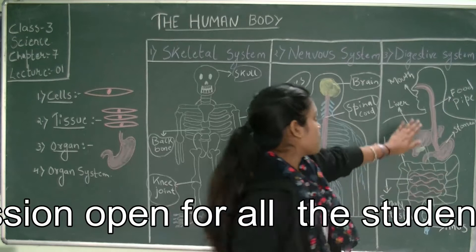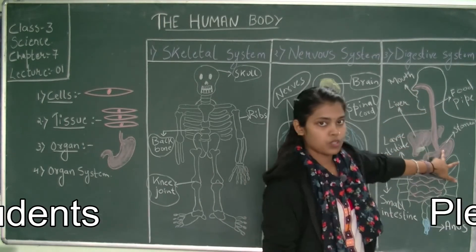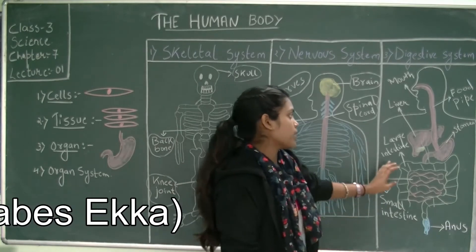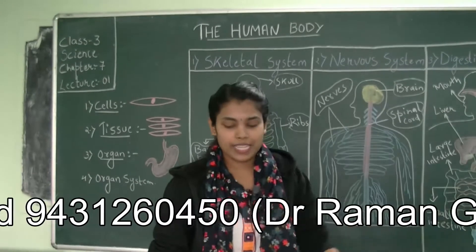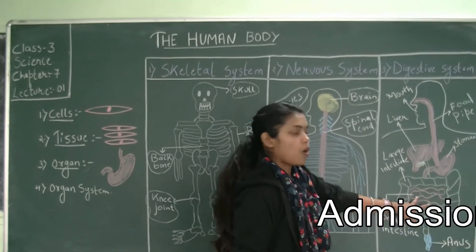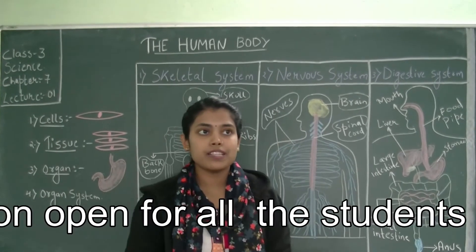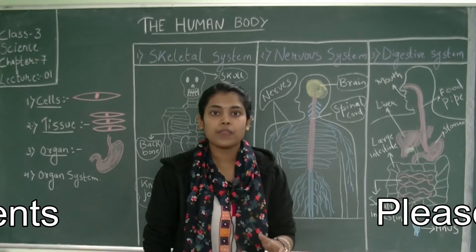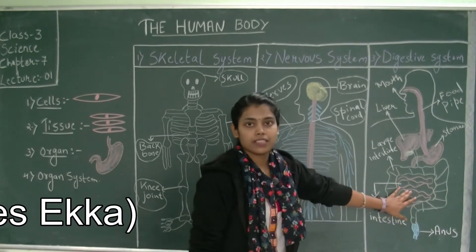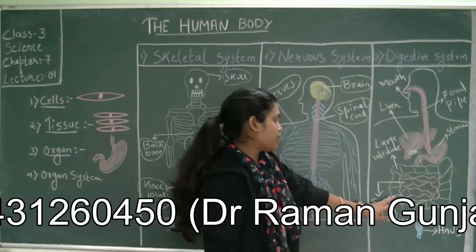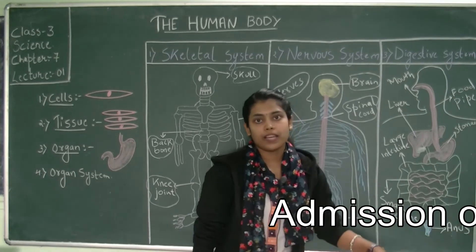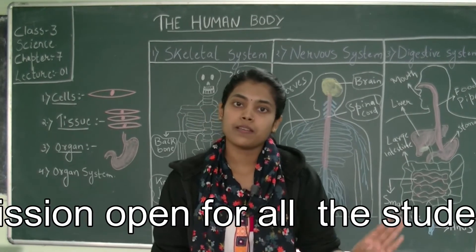The chewed food travels through the food pipe into the stomach where further digestion takes place. After the stomach, the food travels into the small intestine where nutrients, proteins, and minerals present in the food are absorbed. After the food gets digested and nutrients are absorbed by the small intestine, it travels to the large intestine. From the large intestine, it comes to the anus from where the waste materials are thrown out of the body.